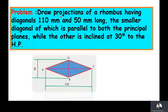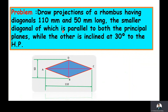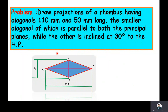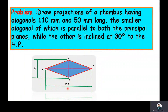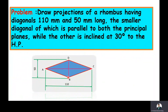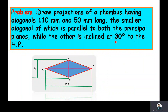The given problem is: there is a projection of a rhombus having diagonals 110 mm and 50 mm long. The smaller diagonal is parallel to both the principal planes, while the other diagonal is inclined at 30 degrees to the HP. The longer diagonal measurement is 110 mm and the smaller diagonal measurement is 50 mm. The smaller diagonal is parallel to both planes as the final condition, and the longer diagonal is making an angle of 30 degrees to the HP.